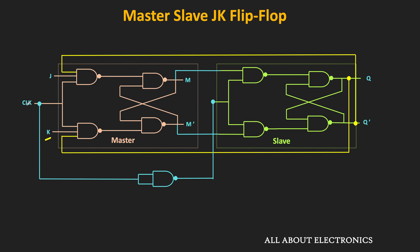During the on-time of the clock, the master latch will respond and generate output based on the J and K inputs as well as the previous outputs Q and Q-bar. Since the slave latch receives the inverted clock, it remains inactive during clock on-time. That means both its outputs will be equal to 1, and it will hold its current state.